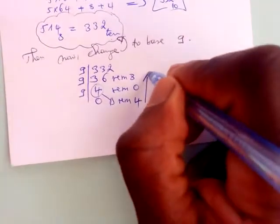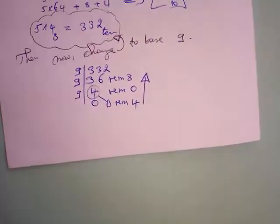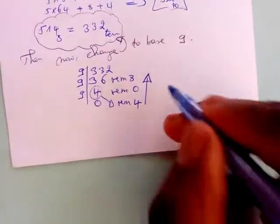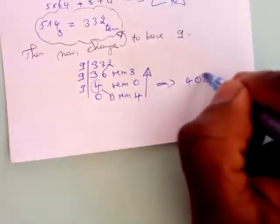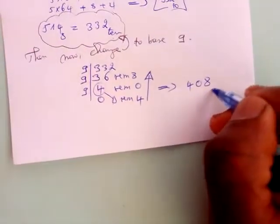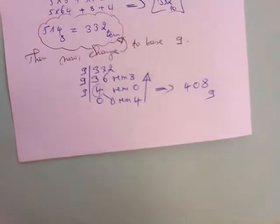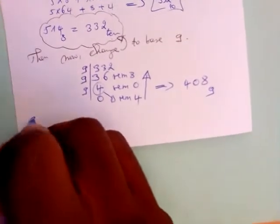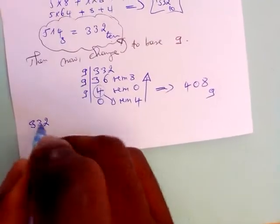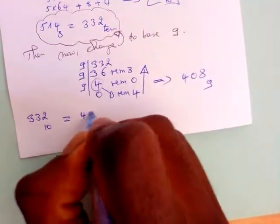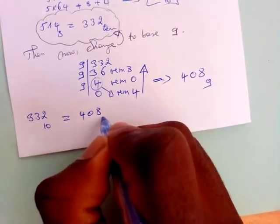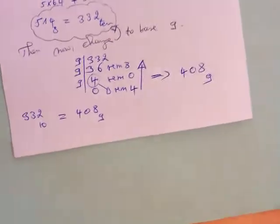It means our solution will be 408 within base 9. So, 332 in base 10 is equal to 408 in base 9. It means now,